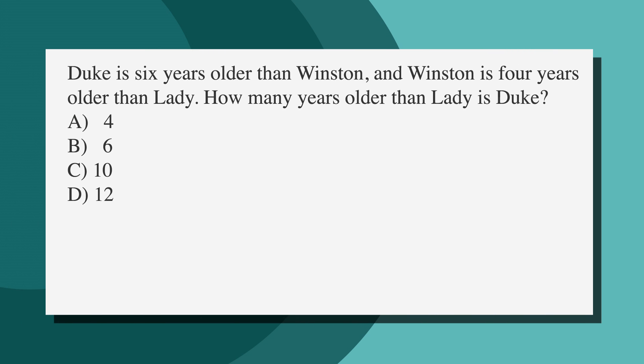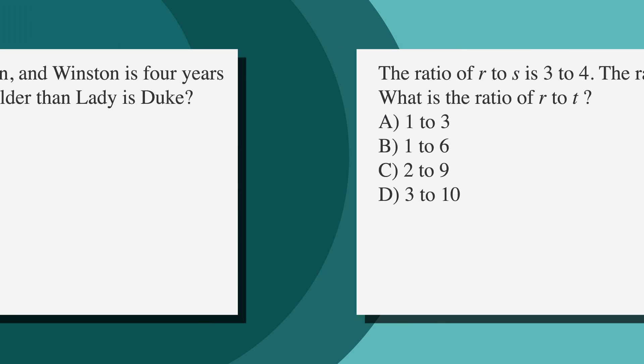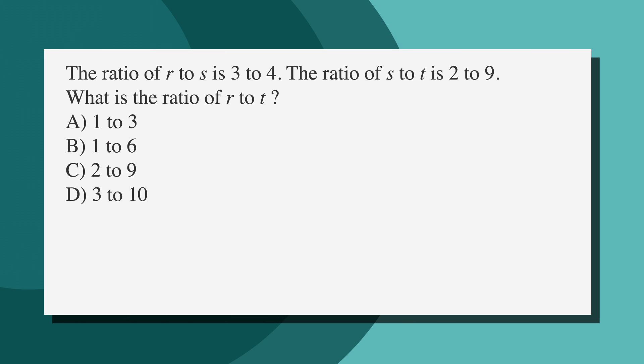The Picking Numbers strategy also comes in handy when the question asks for the relationship between two numbers or variables, like in this question where we're asked to find how many years older Duke is than Lady. We can also use it when the question asks for the ratio between two unknown numbers, like in this problem where we need to find what the ratio of r to t is.